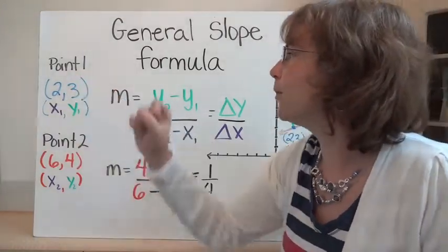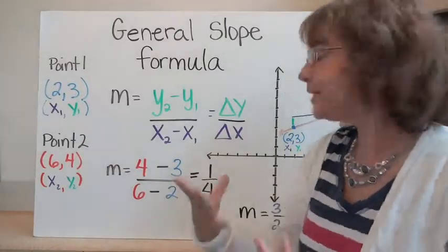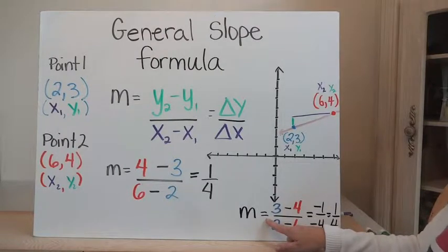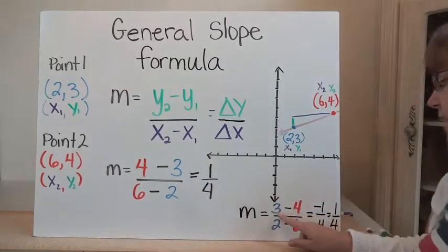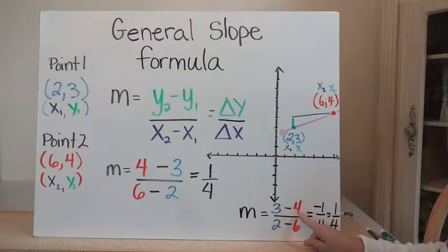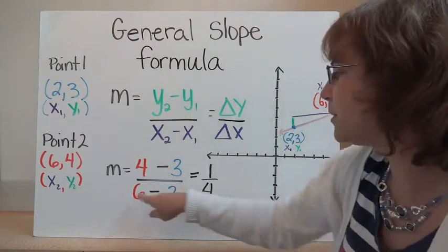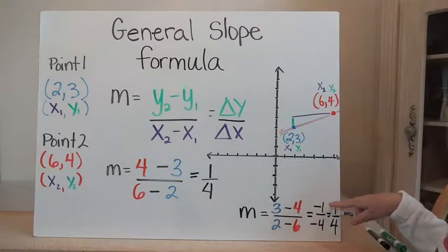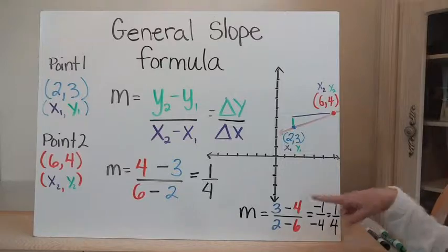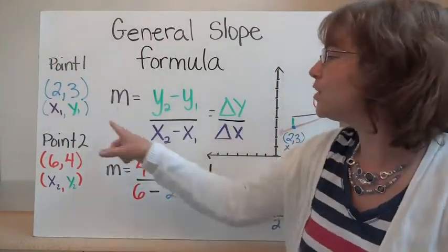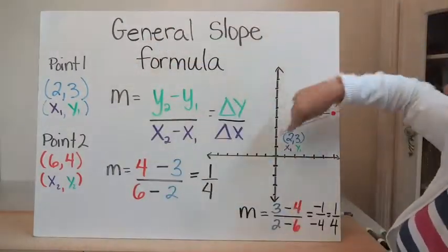What if I switched my points — made the first point 2 and the second point 1? Would the formula still work? Yes, it would. So y-sub-2 becomes three, y-sub-1 becomes four: three minus four is negative one. And x-sub-2 becomes two, x-sub-1 becomes six: two minus six is negative four. Negative one over negative four is the same as one fourth. So it doesn't matter which point you assign as point 1 or point 2 — you still get the same slope, which carries through the whole line.